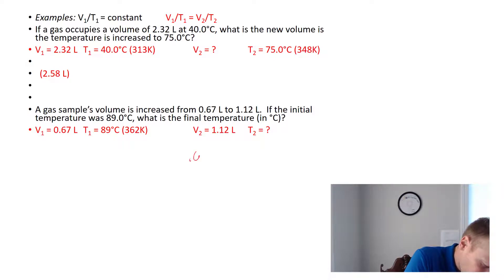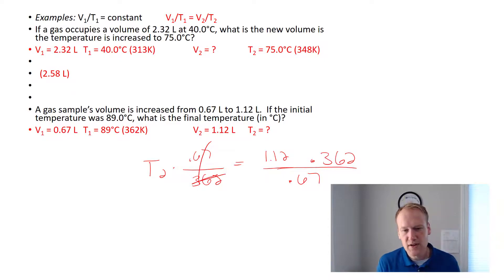Here's another problem solving for temperature. Our V1 is 0.67. Our T1 is 362 after converted to Kelvin. V2 is 1.12. And we don't know T2. In this case, we've got to get T2 out of the denominator. So what I'm going to do is multiply both sides by T2. This will cancel. And then I'm going to multiply the other side by 362 and divide by 0.67. So times 362, that'll cancel this out. And then divide by 0.67, and that'll cancel that out. Solving for T2, that answer would be 605 Kelvin. But it asks for the temperature in Celsius. So we'd subtract 273 and we'd get back to 332 degrees Celsius.